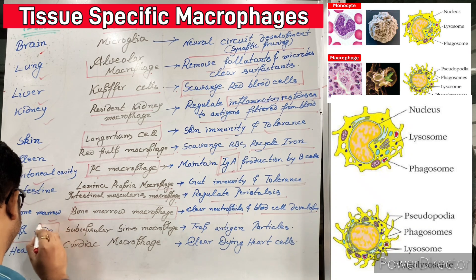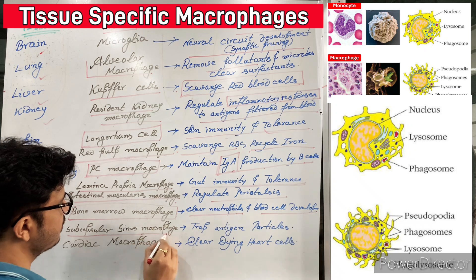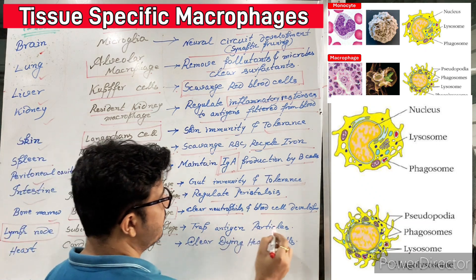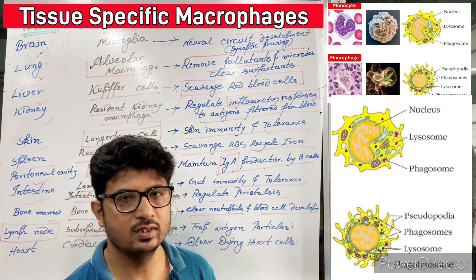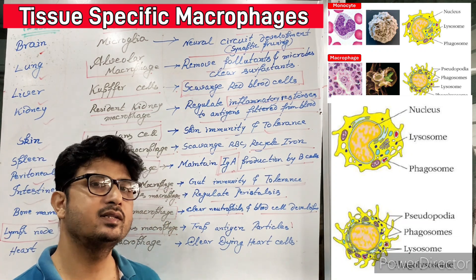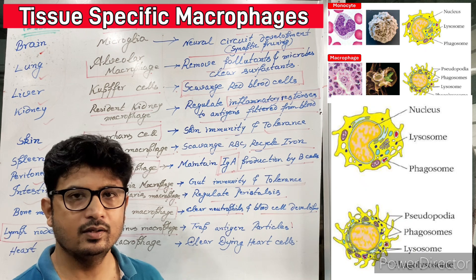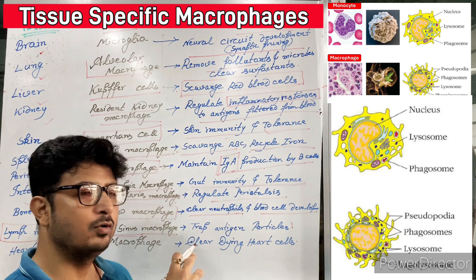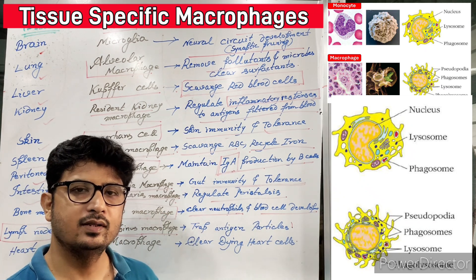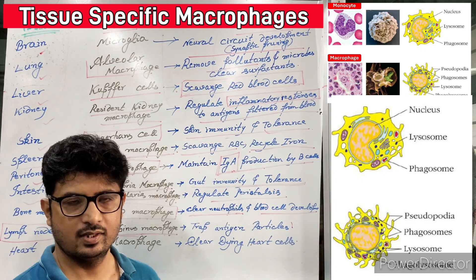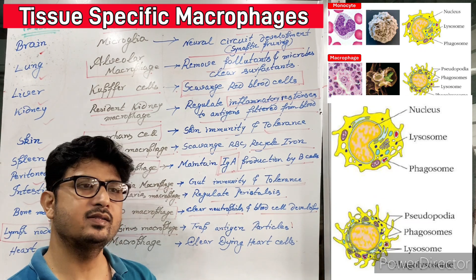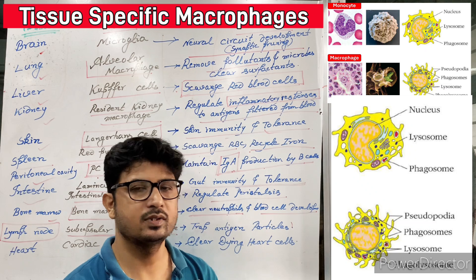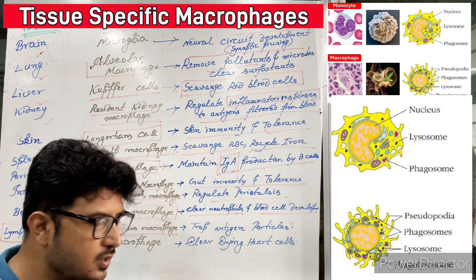In the lymph node, lymph node macrophages are called subcapsular sinus macrophages. These macrophages trap antigen particles. You can remember this point using the analogy of Tihar Jail — just as jails are present all over India to hold criminals, lymph nodes are present all over our body and trap antigens. The antigens are trapped there and encountered with immune cells or lymphocytes or phagocytes, generating a more robust immune response.